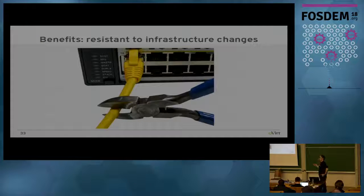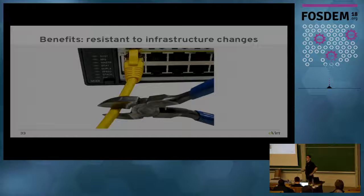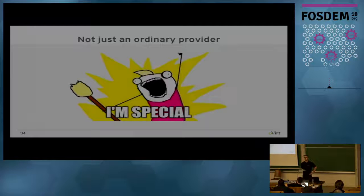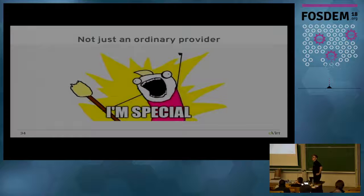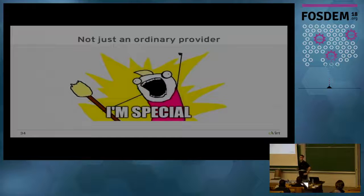Similarly, the solution is resistant to infrastructure changes. If you need to change anything in the networking infrastructure, just make sure packets can be routed to the other hosts. Originally the provider was supposed to be one of many network providers in the system — we already had the Neutron provider, and there was an external party working on their own network provider for oVirt for a legacy solution. But when we were creating it, we liked it so much that we decided to make it a first-class solution next to our native networking.